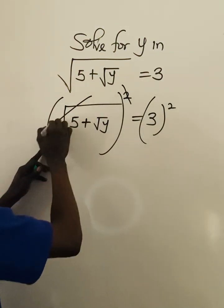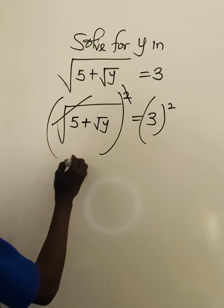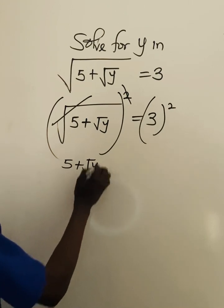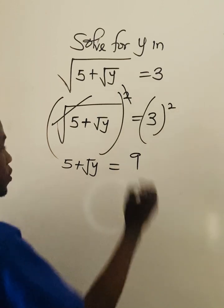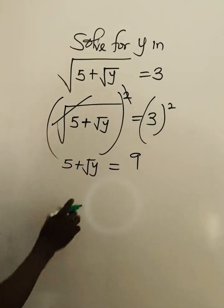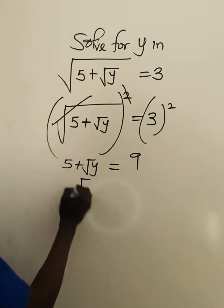Square will cancel this square root, then we'll have 5 plus root y equal to 3 squared. That is 3 times 3, so that would give 9. Now let us follow like that. We're going to have root y equal to 9 minus 5.